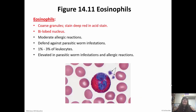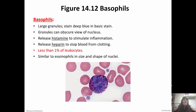Eosinophils have coarse granules that stain a very deep red, and a bilobed nucleus. They moderate allergic reactions and defend against parasitic worm infestations. Only one to three percent of leukocytes are eosinophils — if you have a parasitic worm infection or allergic reaction, these will be elevated. Less than one percent of leukocytes are basophils. They have large granules that stain a very deep blue and can sometimes hide the nucleus. They release histamine to stimulate inflammation and heparin to stop blood clots from forming.